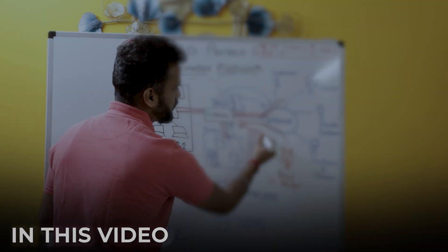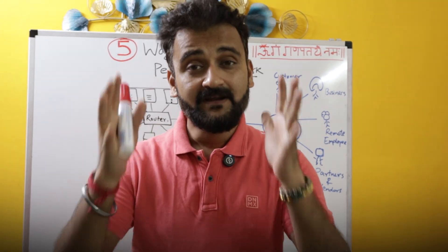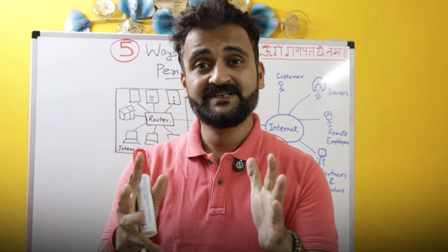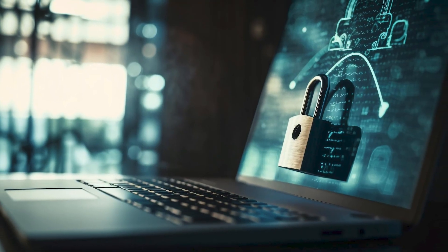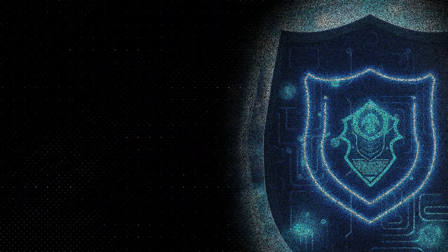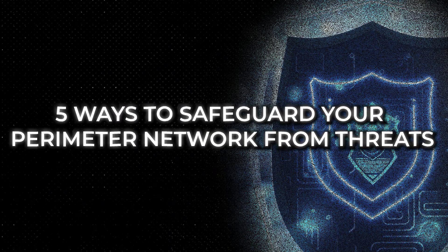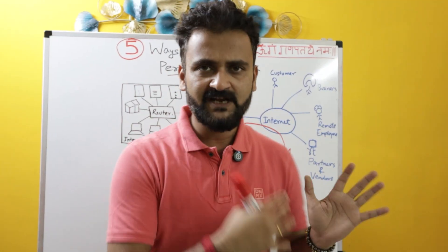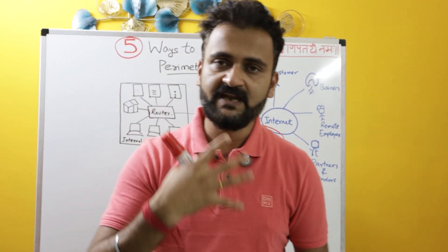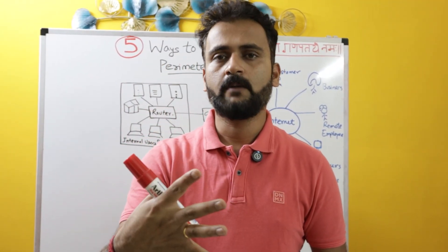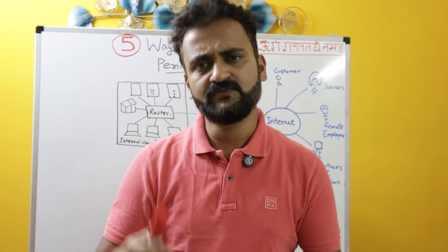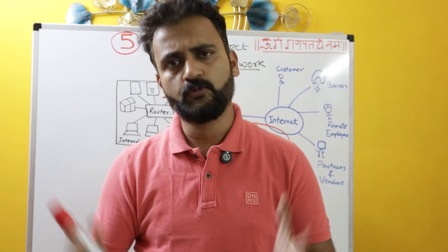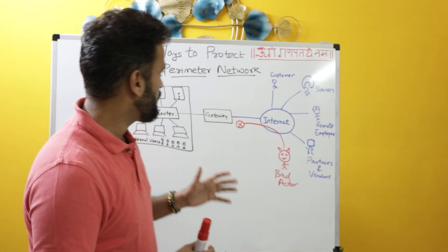Your perimeter network is the network which has to be protected at all costs from all kinds of cyber attacks. In this video we will understand five ways — five conventional ways with which we have been protecting our perimeter network. But first we'll understand what a perimeter network is, and then we'll discuss those five different ways which we use in combination to protect our network.